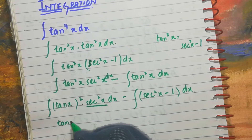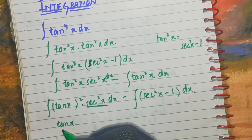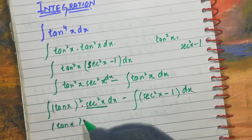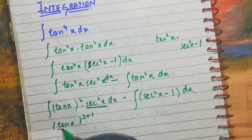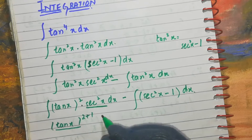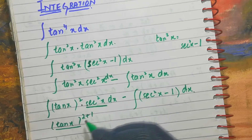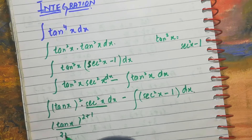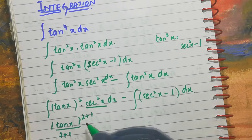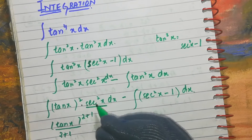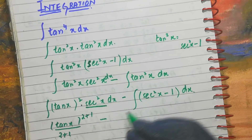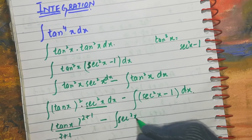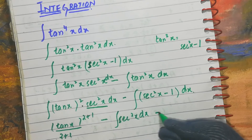Integrating tan²x · sec²x: the power increases, so 2 + 1 = 3, giving tan³x/3. Write 3 in the denominator. Minus the integration of (sec²x − 1) dx.